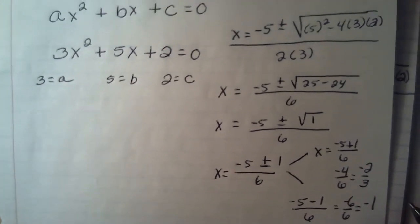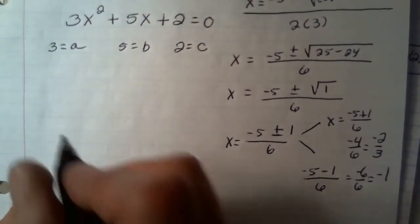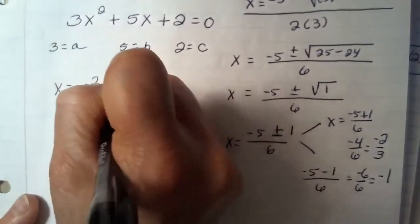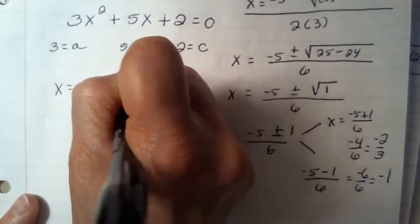So by utilizing the quadratic formula, I've come up with two answers. I have x equals negative 2 thirds, and I have x equals negative 1.